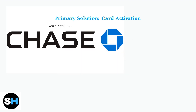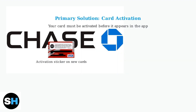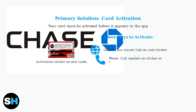First, ensure your card is activated. Activation is a key security measure that links your identity to the account. You can activate your card in three ways: online through the secure website link on the card sticker, by calling the number on the sticker or Chase customer service at 800-432-3117, or directly through the Chase app if you were approved for the card there.